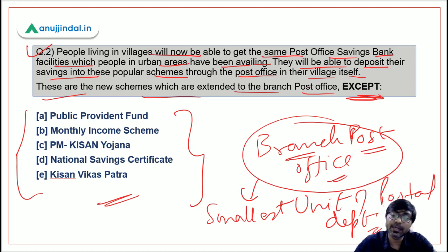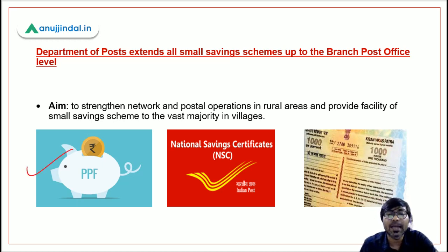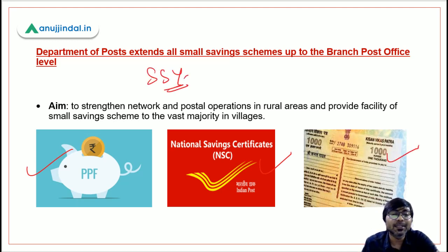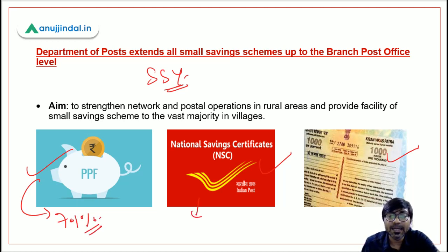The postal department has extended small savings schemes to its smallest unit — the branch post office — so that rural people can also benefit. If we talk about small savings schemes, there are various types such as PPF, which gives 7.1% return currently.